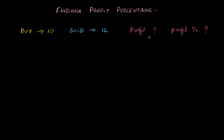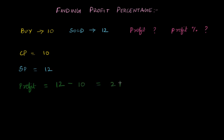The first part is quite simple. I bought for 10 — that's another way of saying my cost price equals 10. And I sold for 12 — that's another way of saying my selling price equals 12. I know that my profit is simply the difference between these two. So my profit equals 12 minus 10, which is 2 rupees.